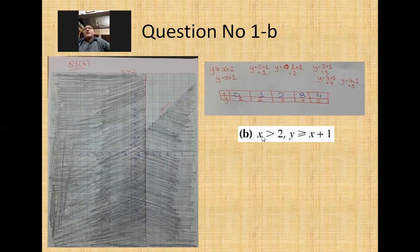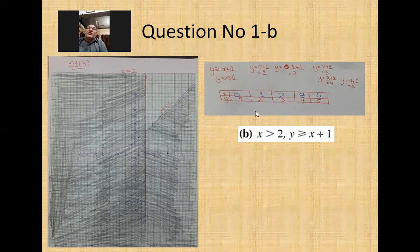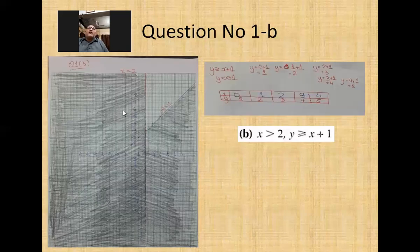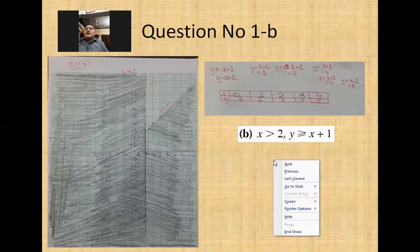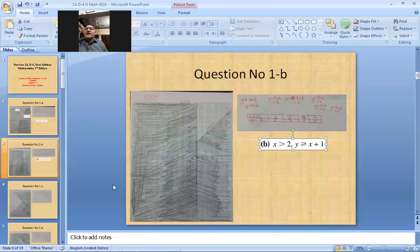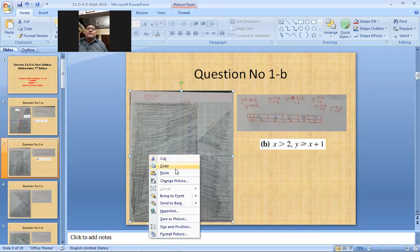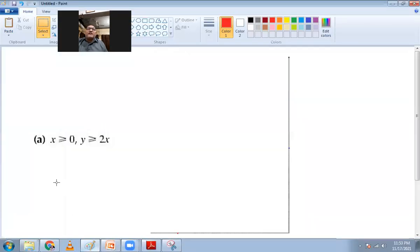One important thing: it's written x > 2, so this line should be dotted. I have drawn a continuous line in Paint, but remember it should be dotted. The line y ≥ x + 1 — since it includes equals — will be a continuous line. Remember this difference between dotted and continuous lines.